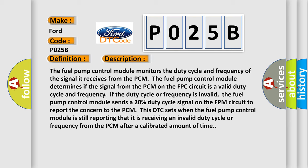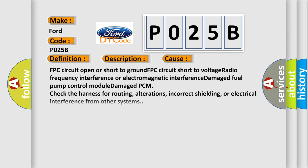If the duty cycle or frequency is invalid, the fuel pump control module sends a 20% duty cycle signal on the FPM circuit to report the concern to the PCM. This DTC sets when the fuel pump control module is still reporting that it is receiving an invalid duty cycle or frequency from the PCM after a calibrated amount of time. This diagnostic error occurs most often in these cases.